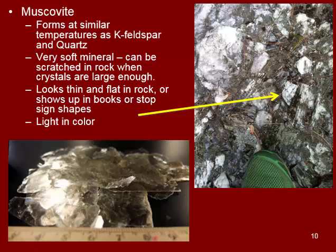Muscovite is another mica. It has the same shape and similar appearance to biotite — it's just a lighter color. And again, this one can come in those stop-sign shapes, the little thin blades, or the books, like you see indicated in this picture.